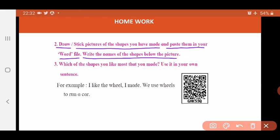Next which of the shapes you like the most that you made. Use it in your own sentence. For example supposing you made the shape a round shape just like the wheel of a car. So you can write down I like the wheel I made. We use wheels to run a car.